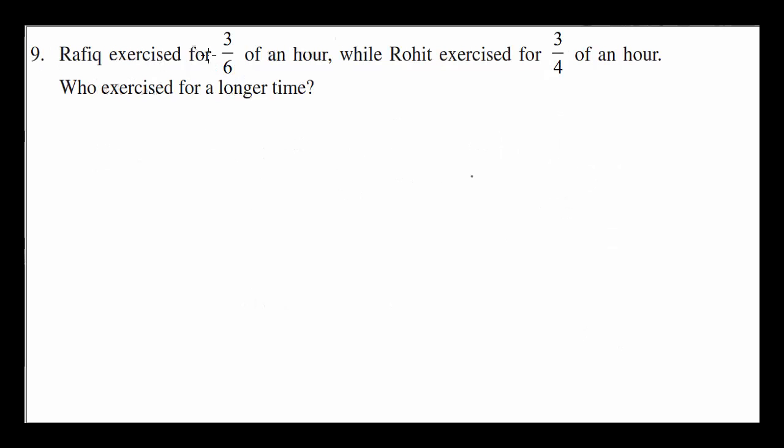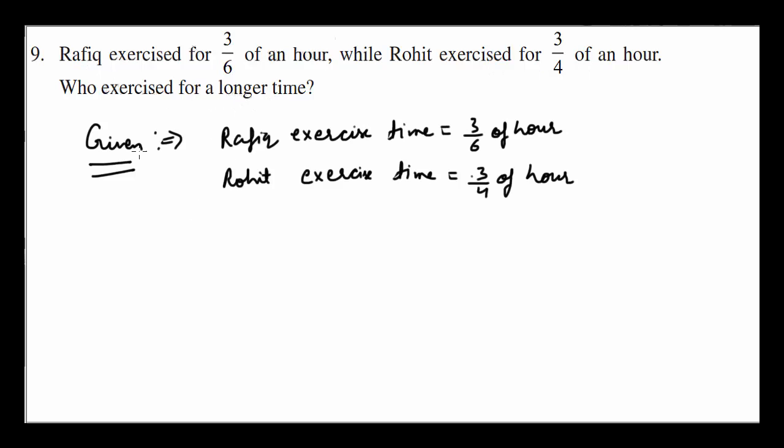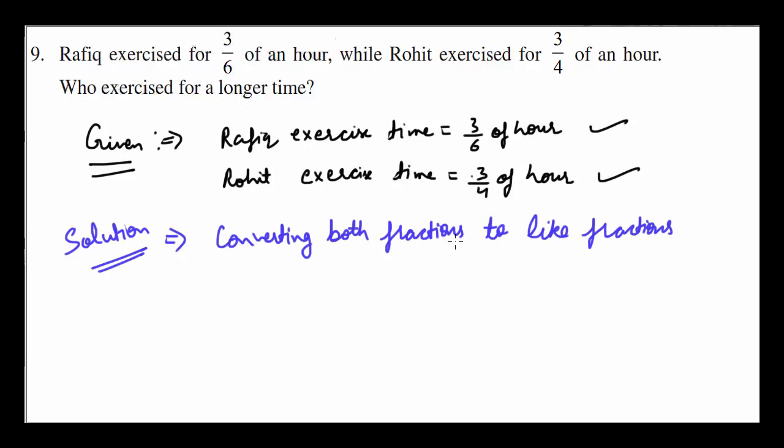Rafiq exercised for 3 over 6 of an hour while Rohit exercised for 3 fourths of an hour. Who exercised for longer time? So first of all, let's write the given part. 3 over 6 for Rafiq and 3 over 4 for Rohit. Now let's make them like fractions. When we're adding both fractions to like fractions, we get, what do we get?